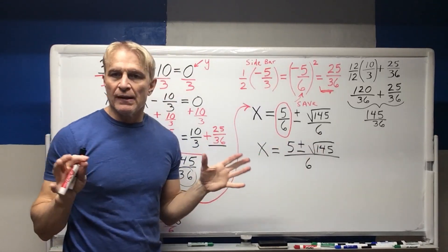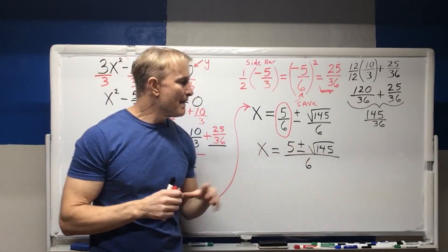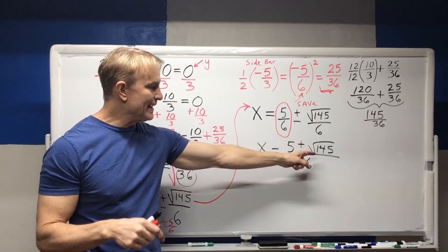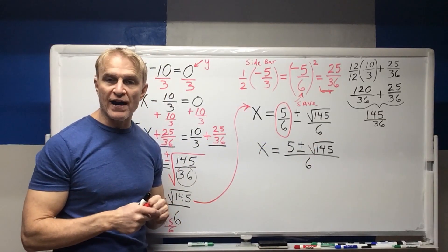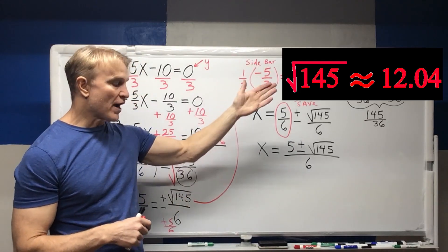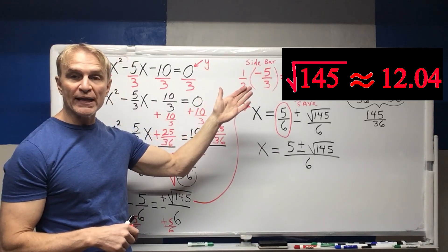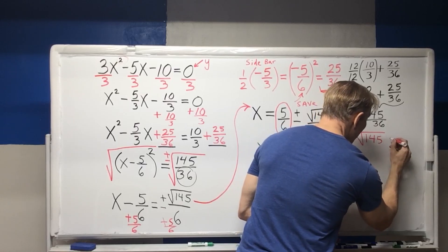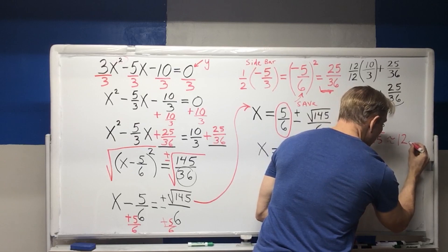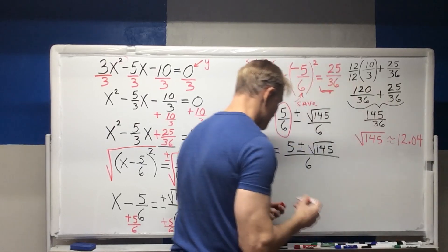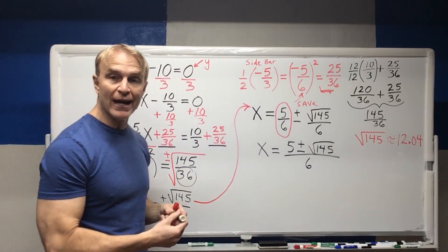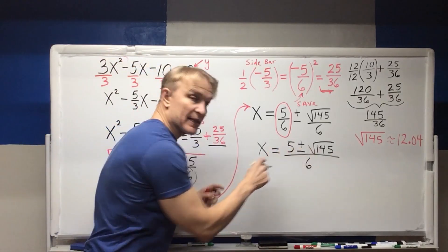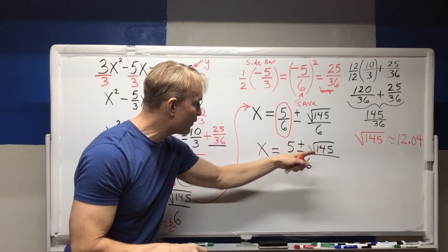Now we would go to our calculator at this point. Maybe that's the answer that they want on your test or on your homework. But we're interested more from an engineering point of view or something that we want to know where this is on the graph. So I need that square root of 145. So I would put square root of 145 into my calculator. The square root of 145 is approximately 12.04. So let's quickly do the math. We want to really indicate here what is what. So let's separate these.